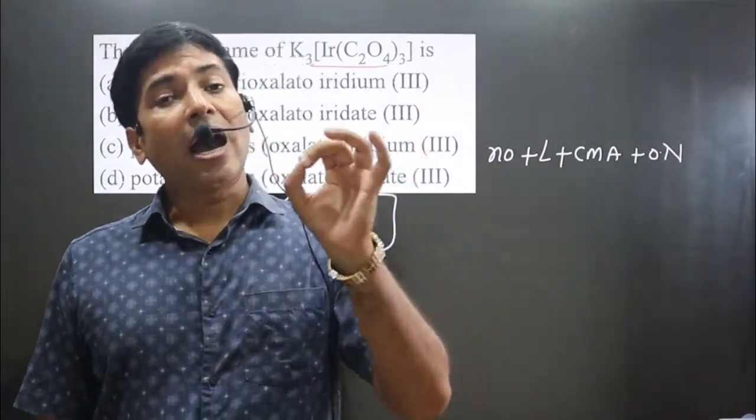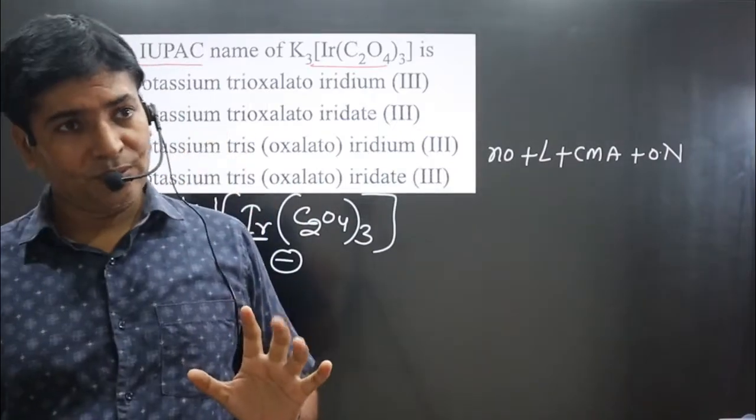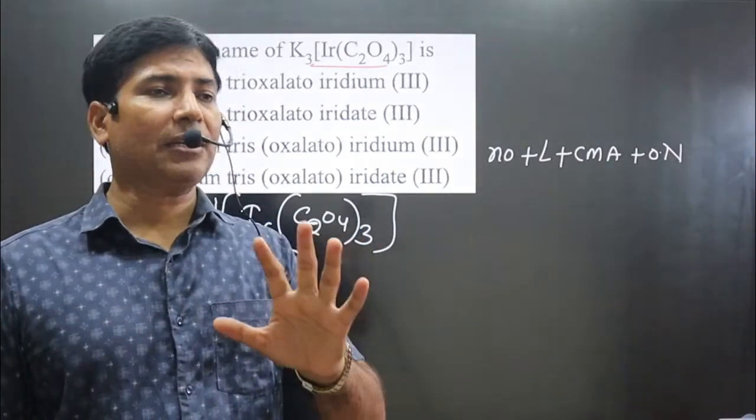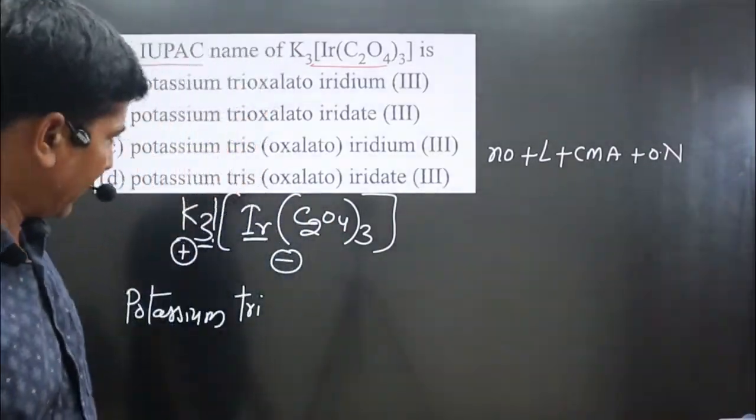That's why we can use tris as well as tri also. Polydentate ligand: tris. Three times it is given there. Unidentate ligand: tris and tri.